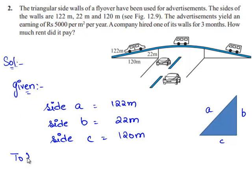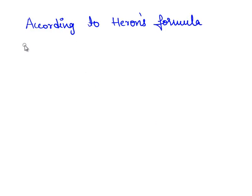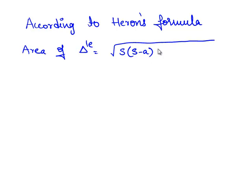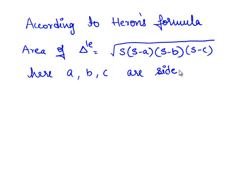First, we need to find the area of the triangle. According to Heron's formula, the area of a triangle is given by the square root of s times (s minus a) times (s minus b) times (s minus c), where a, b, and c are the sides of the triangle, and s is the semi-perimeter, which is (a plus b plus c) divided by 2.